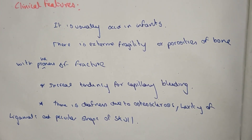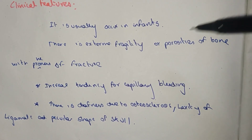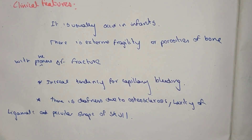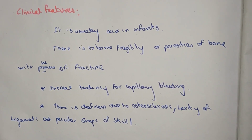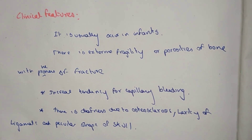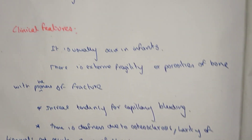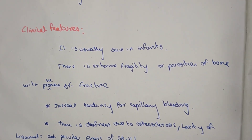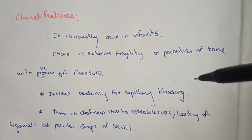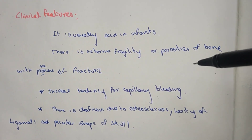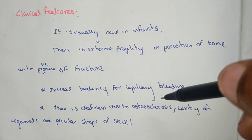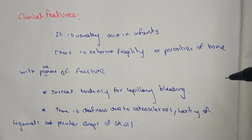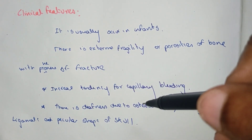Clinical features: These infants present with extreme fragility and porosity of the bones. The bone is fragile and prone to fractures. Fractures occur in the neck and upper back. There is increased tendency of capillary bleeding and deafness due to otosclerosis. There is also laxity of ligaments and peculiar shape of the skull.